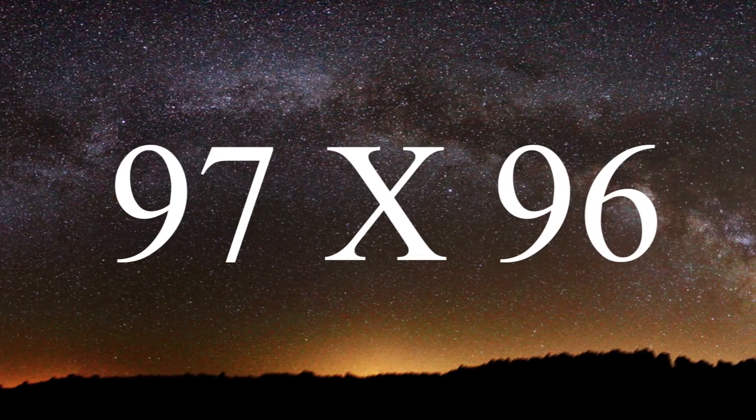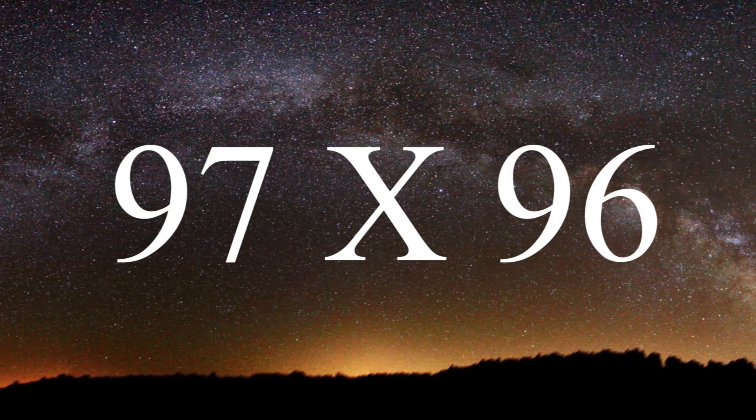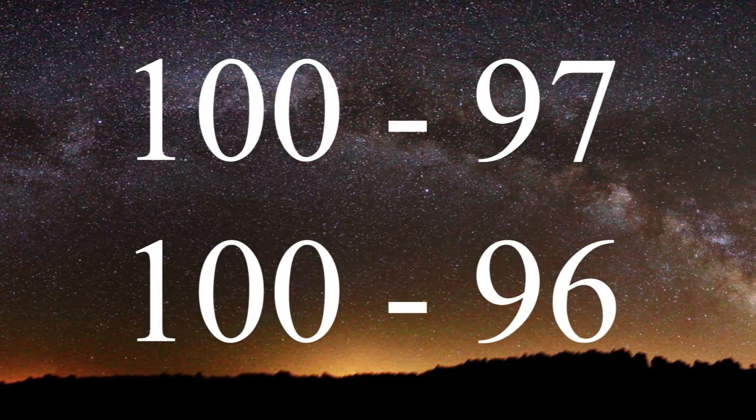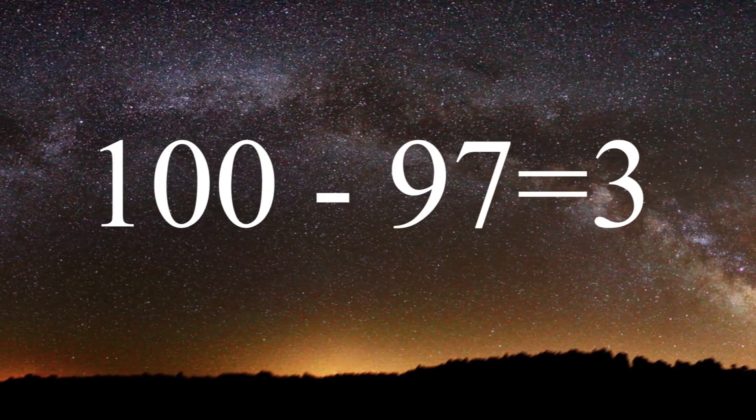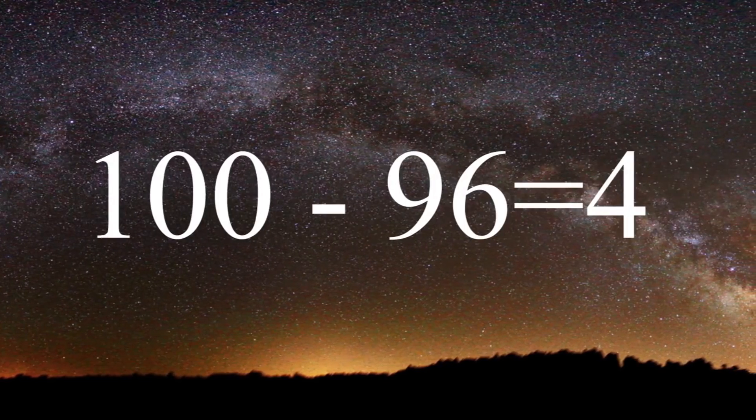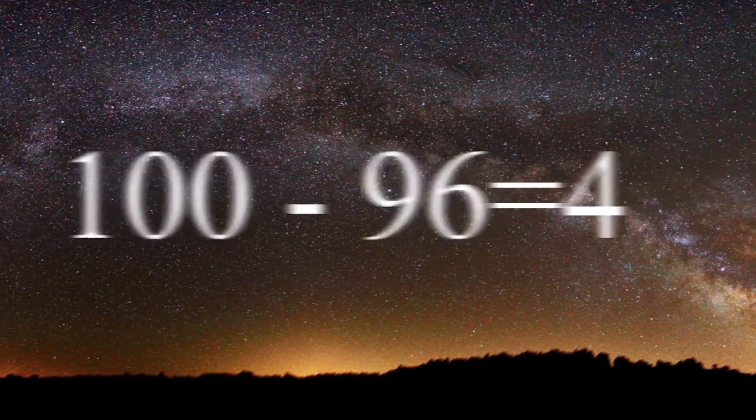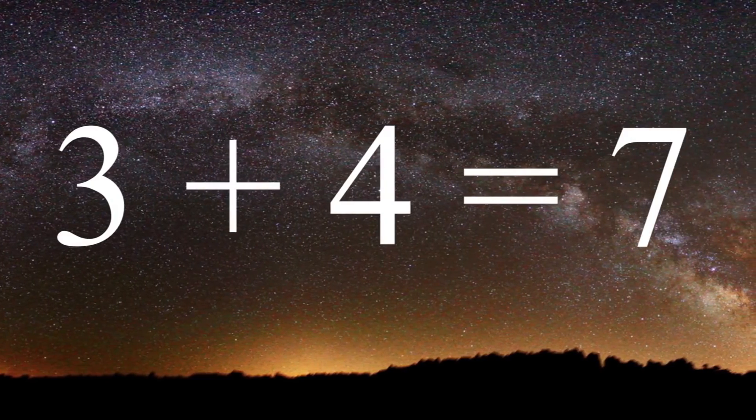For example, if you need to solve 97 times 96 in your head, you break it down by subtracting both numbers from 100. So 100 minus 97 would be 3. 100 minus 96 would be 4. When you add those two numbers together, you get 7. When you take the 7 and subtract that from 100 like you did the other two numbers, the answer is 93, which is the first half of your answer.